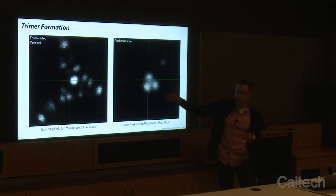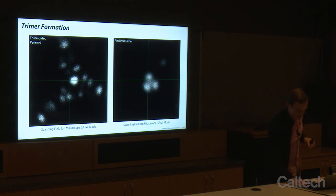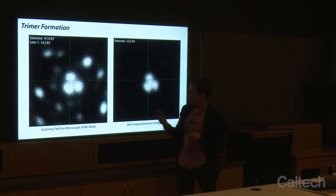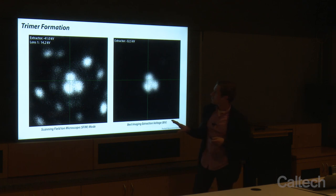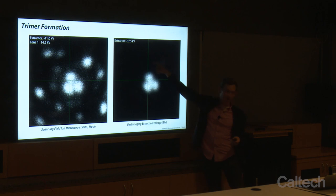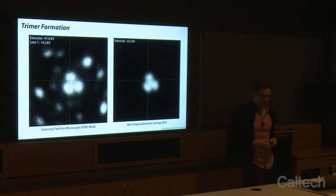Since those three atoms are perched at the very end of the tip, they'll be the ones ionizing most of the gas. We rip off atoms by going as high as negative 40 to negative 45 kV, then bring it back down to something like negative 32.5 kV. This is the optimum extraction voltage — the best imaging extraction voltage — so we get the most brightness possible from these atoms.